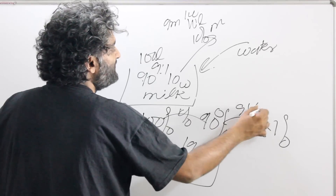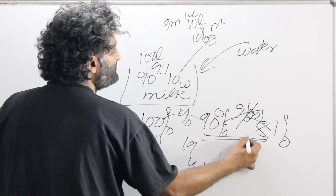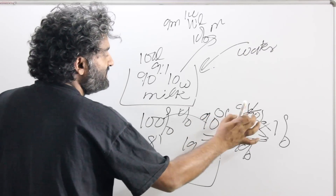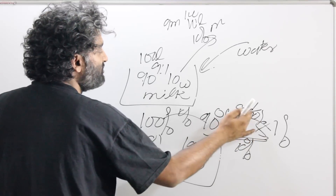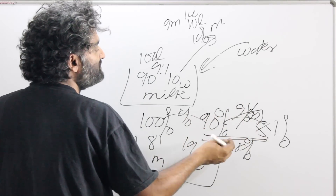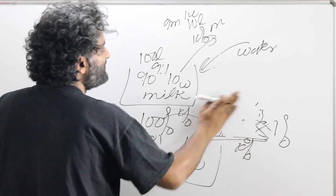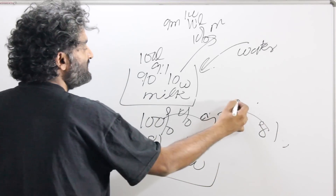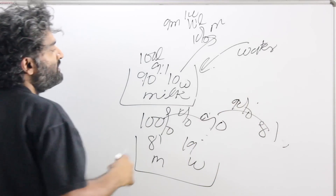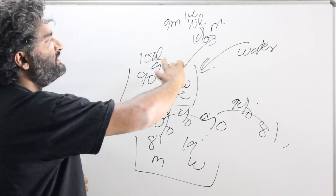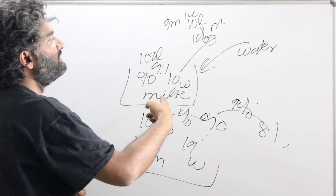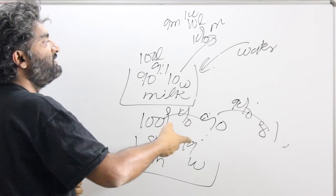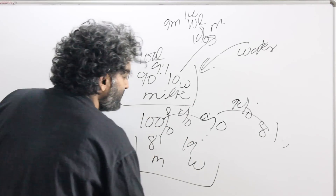After the second operation, milk percentage is 81%. Going from 90% to 81% is a 10% reduction on 90. So each time 10% is removed and replaced with water, the milk percentage reduces by 10% of itself. This means we can apply a multiplying factor: each removal-and-replacement of 10% multiplies the milk percentage by 9/10.